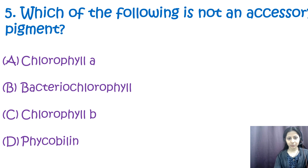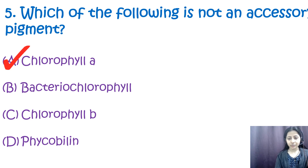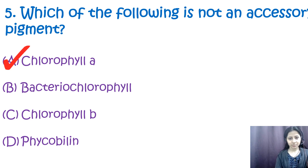Question number five: which among the following is not an accessory pigment? Options are: a) chlorophyll a, b) bacteriochlorophylls, c) chlorophyll b, d) phycobilins. The correct option is a, chlorophyll a, because it is a primary pigment that absorbs light for photosynthesis. The other three are accessory pigments — light-absorbing compounds that work in conjunction with chlorophyll a to capture more wavelengths of light. Bacteriochlorophylls are found in purple bacteria and green sulfur bacteria; chlorophyll b in green algae and higher plants; phycobilins in cyanobacteria and red algae.